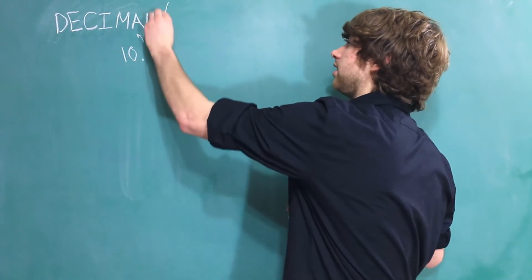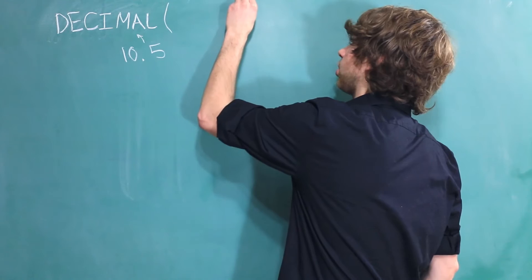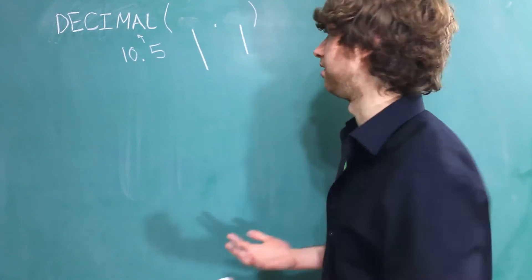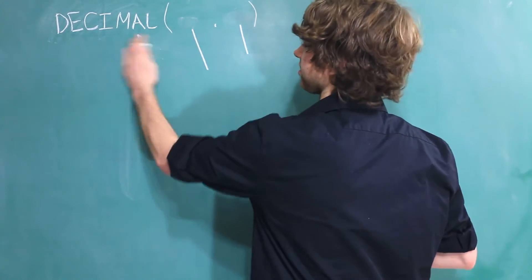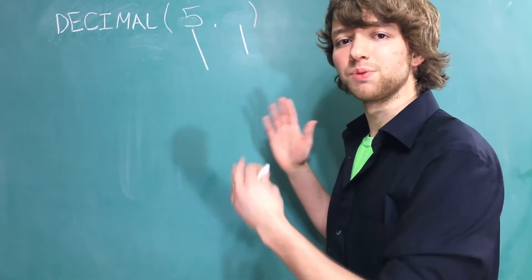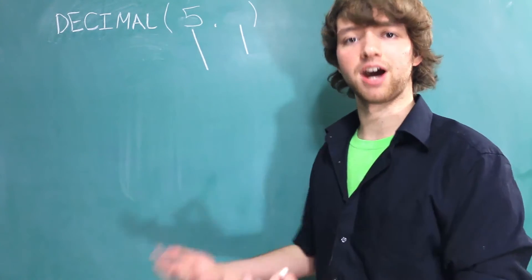When you create a decimal column, you are going to define a certain number of digits that are allowed. So within here you are going to put two numbers. The first number is the number of digits you can allow inside of that number. So let me erase this to not cause any confusion. And let's say the number is 5. That means within one row for this column, we can store a number that has up to 5 digits.